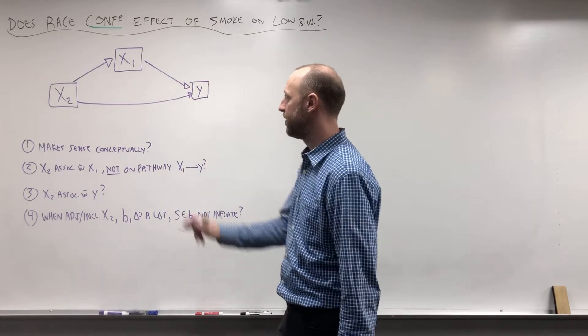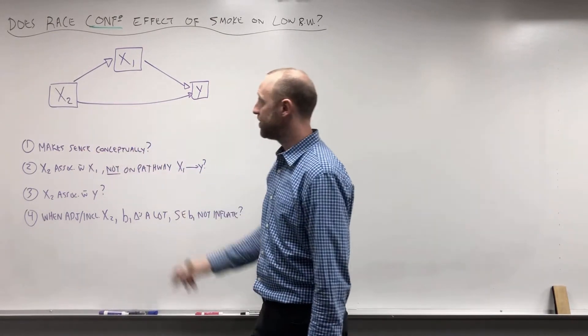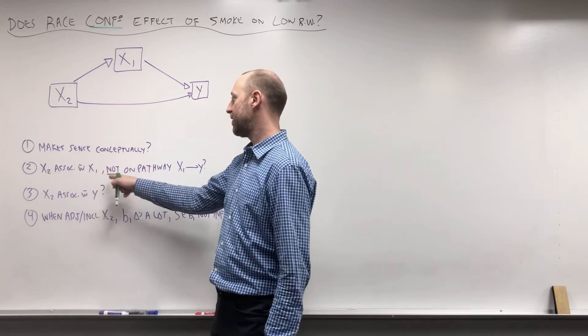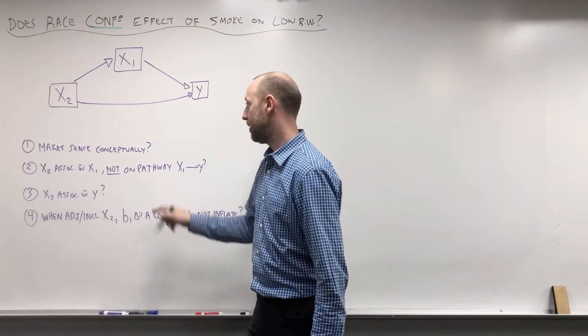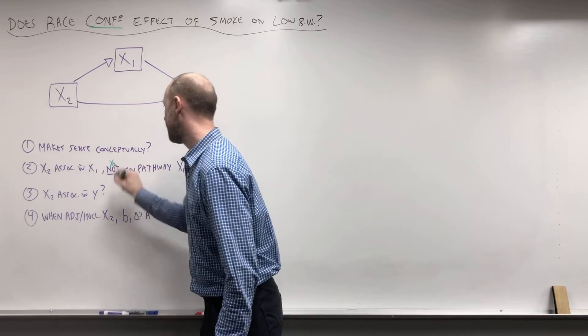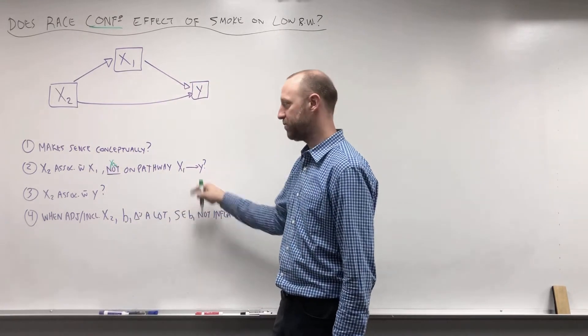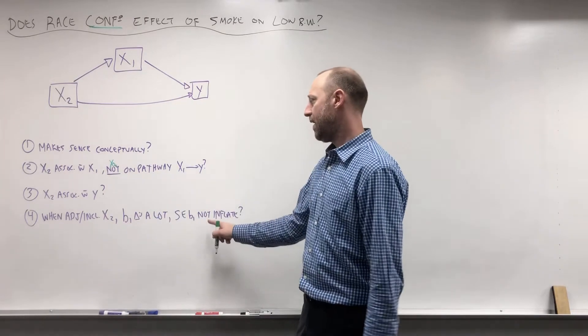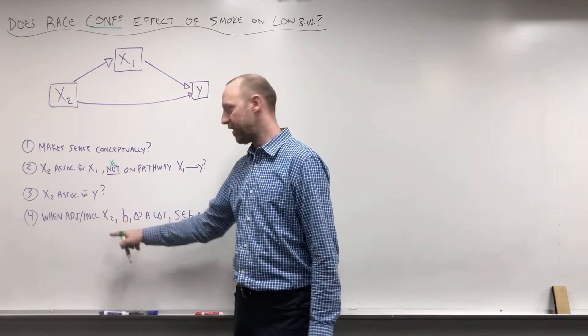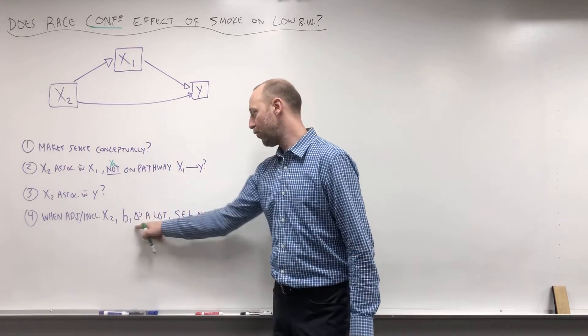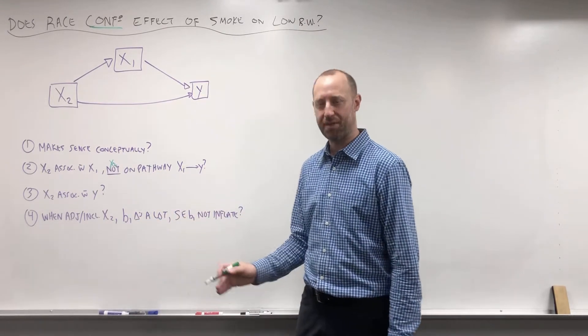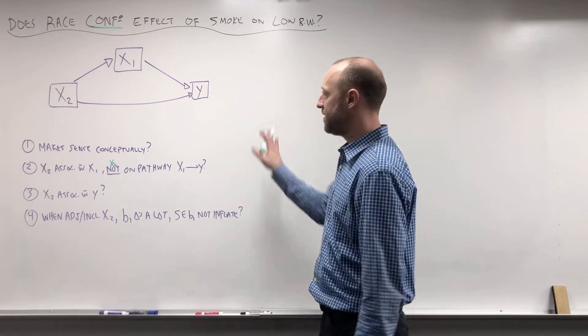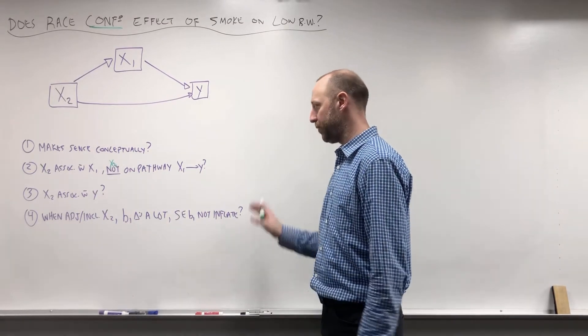So this diagram here: first, does a variable make sense conceptually as a confounder? Is X2 associated with X1, but X2 is not on the pathway between X1 and Y? X2 needs to be associated with the outcome. And when we adjust for that variable X2, or we include it in the model, the coefficient for b1 is going to change subjectively by a lot. So this is the kind of conceptual framework for a confounder.